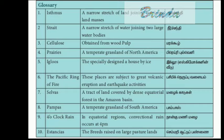Now let us see the glossary part. Isthmus: a narrow stretch of land joining two large land masses. Strait: a narrow stretch of water joining two large water bodies. Cellulose: obtained from wood pulp. Prairies: a temperate grassland of North America. Igloos: specially designed houses made of ice.